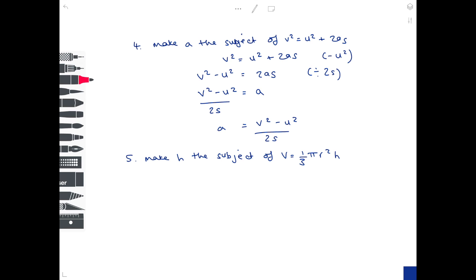And in our final example make h the subject of v equals the third pi r squared h. Another tricky one here. Very similar to the one we did on the previous slide. So again that third is tricky so how do we get rid of it? Well we need to make it equal 1. How do we do that? By multiplying both sides by 3.